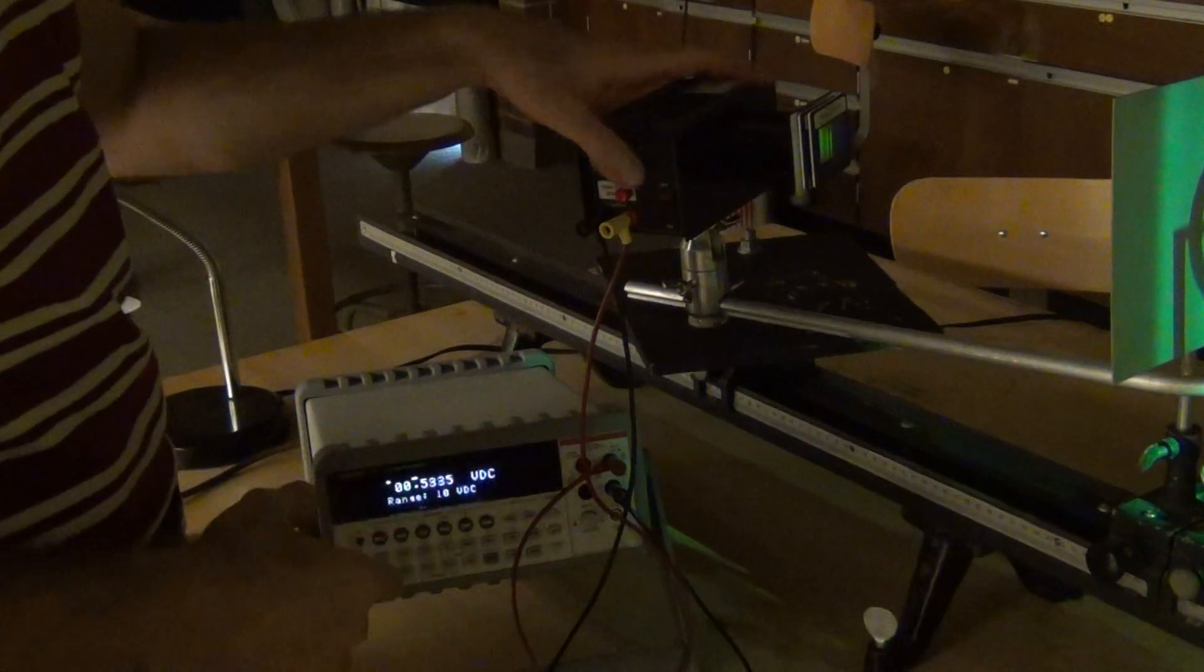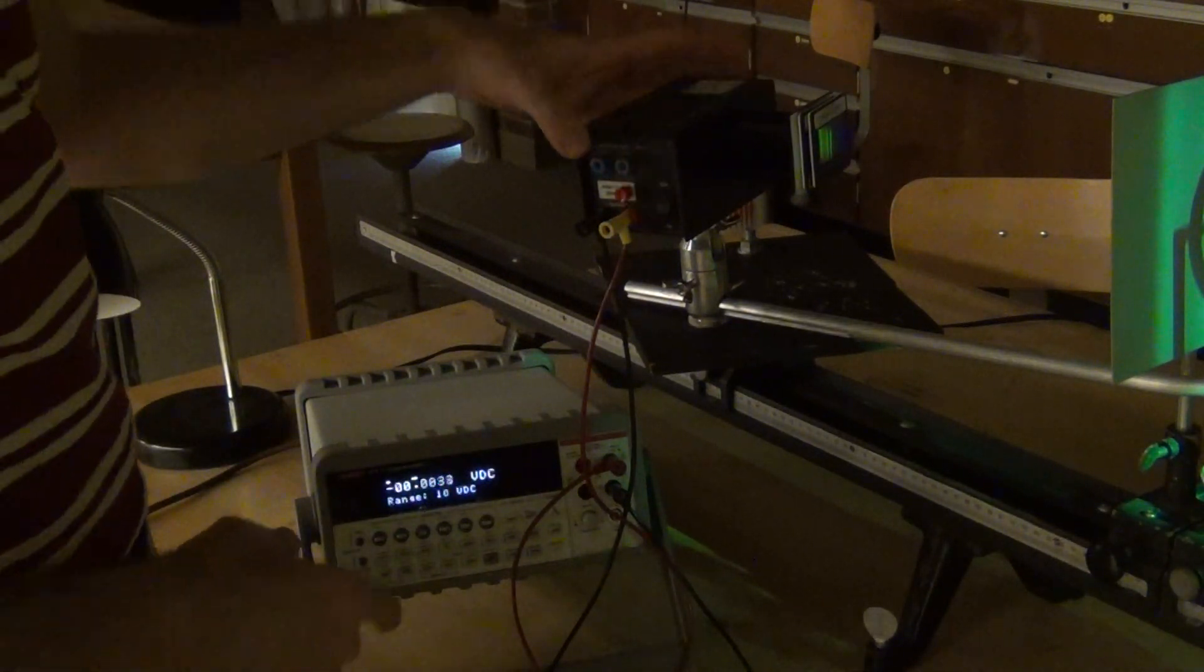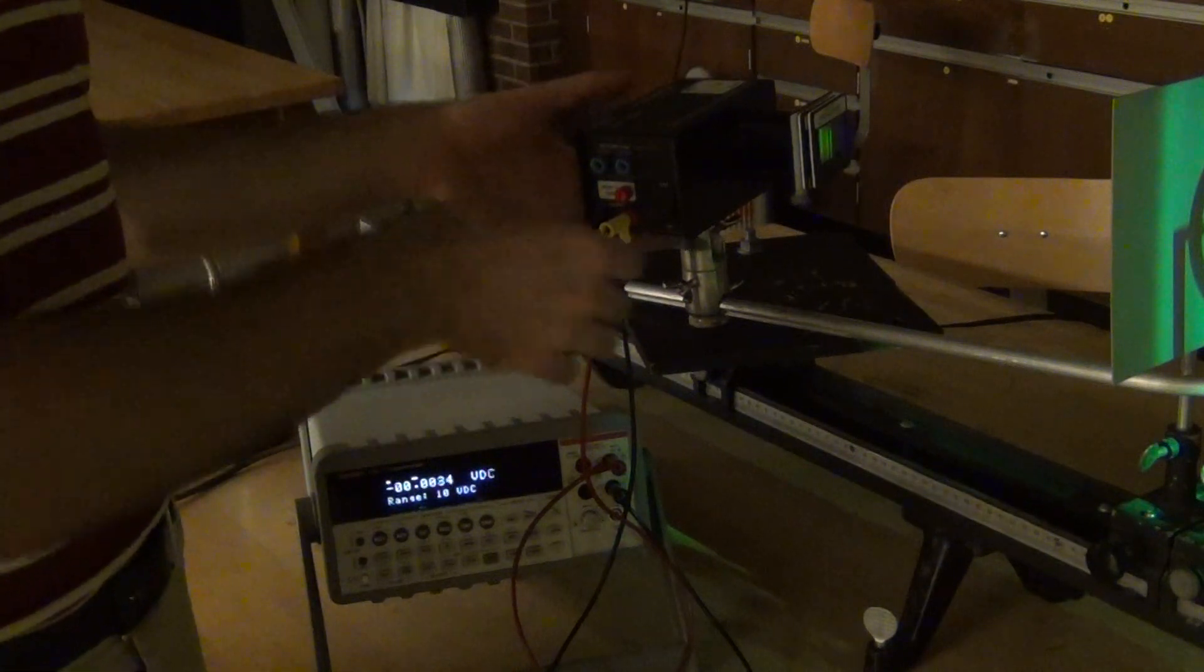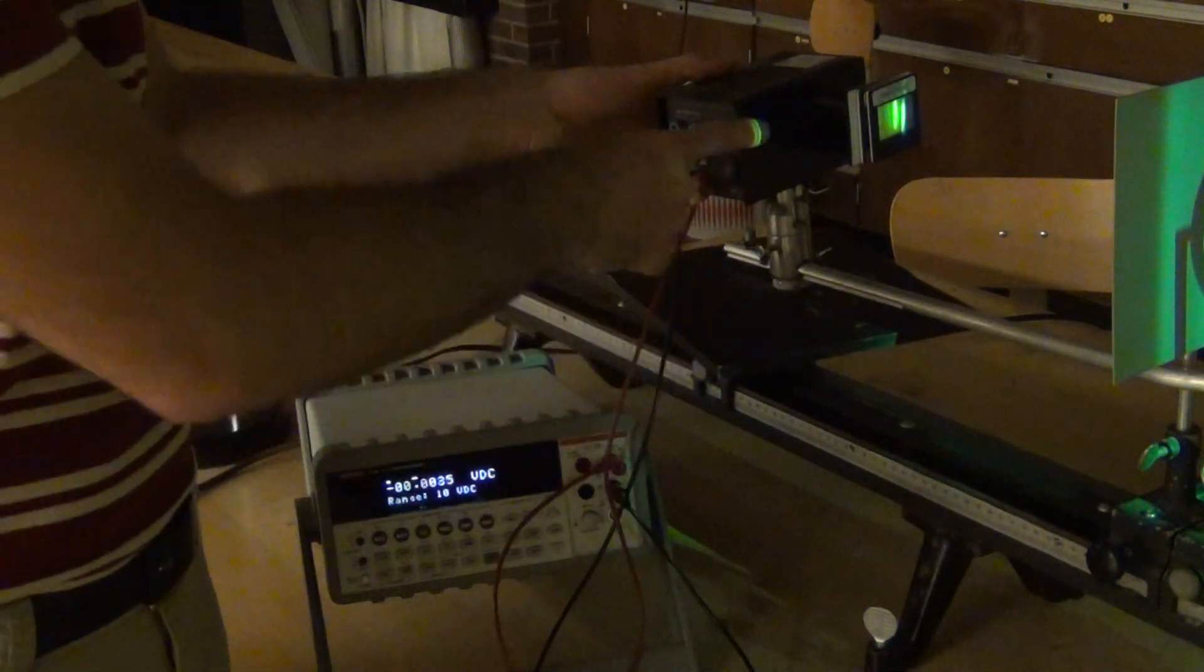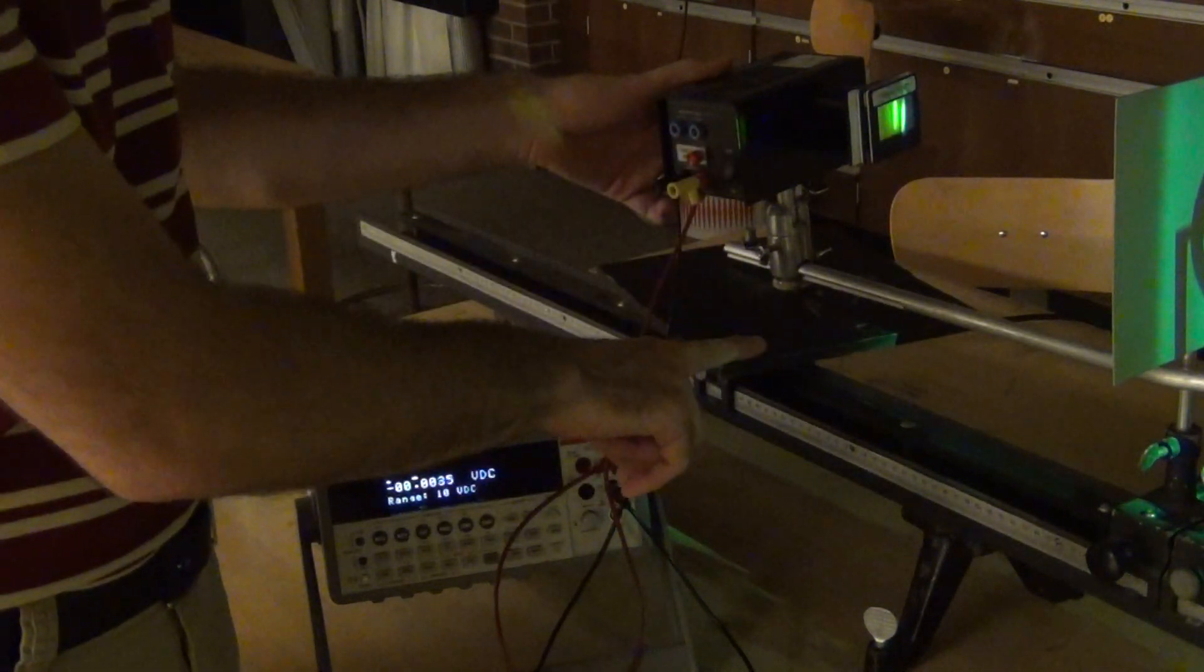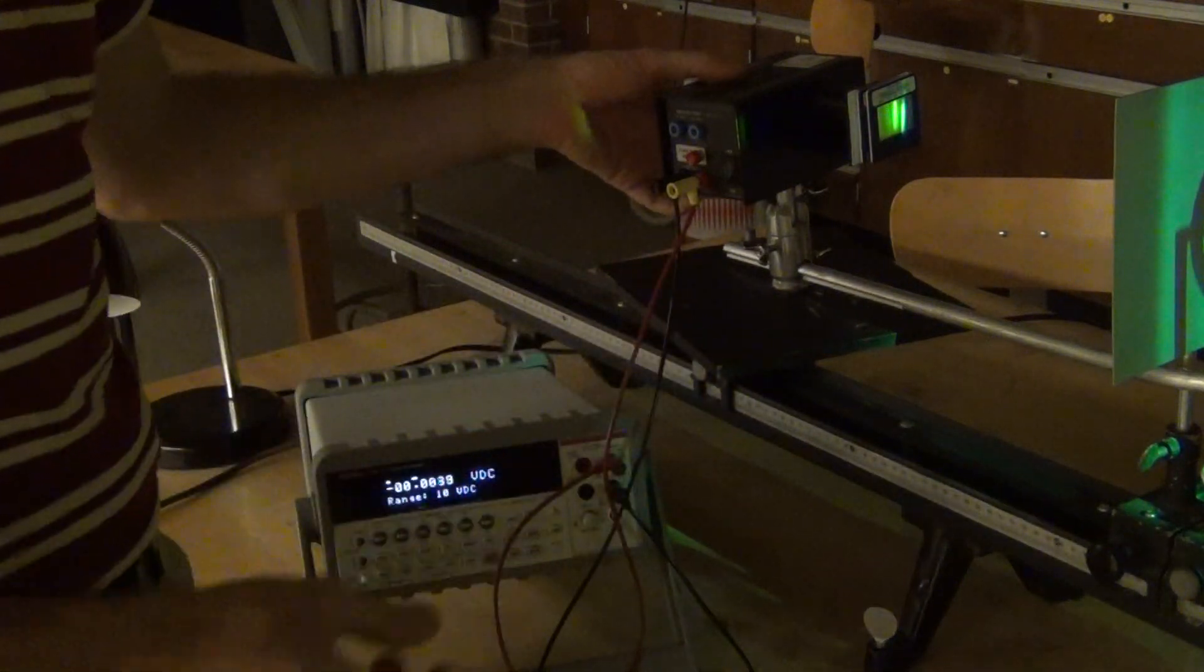When you're all done with all of those measurements, you can go ahead and turn off the photodiode. And again, always make sure that this photodiode stays over its platform and is supported.